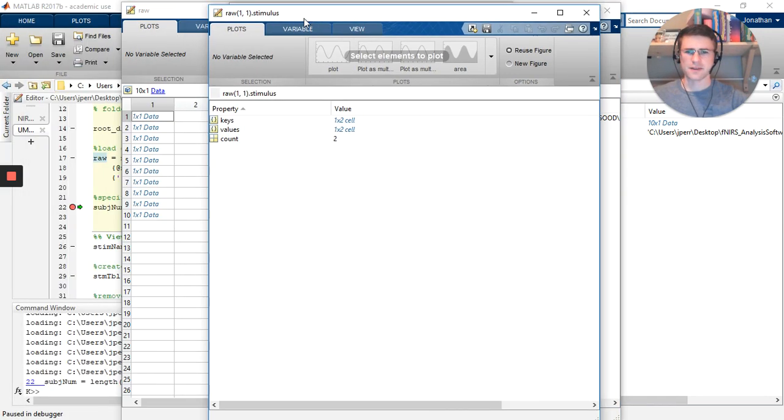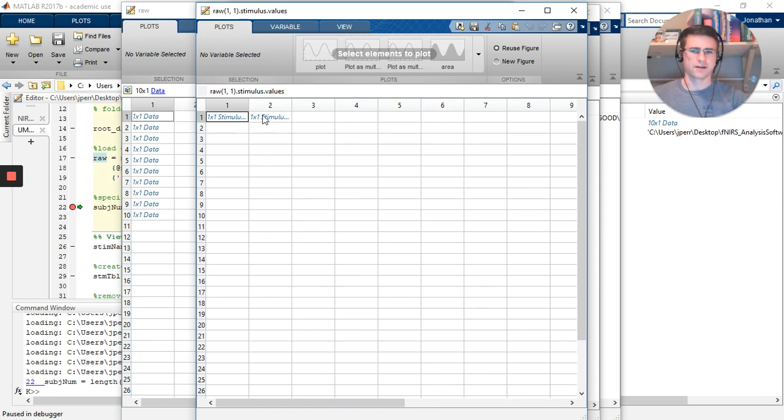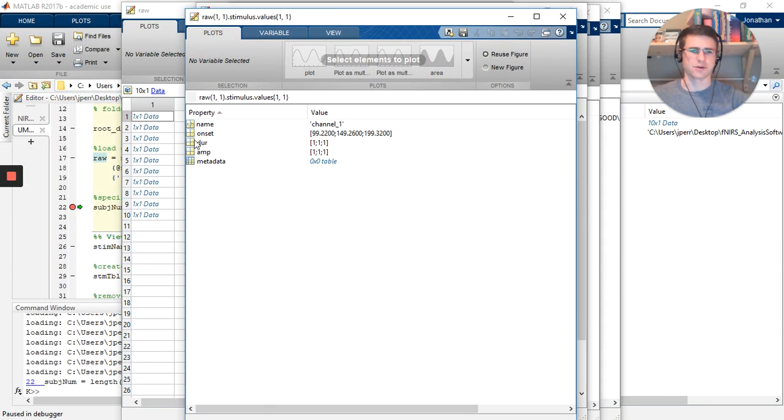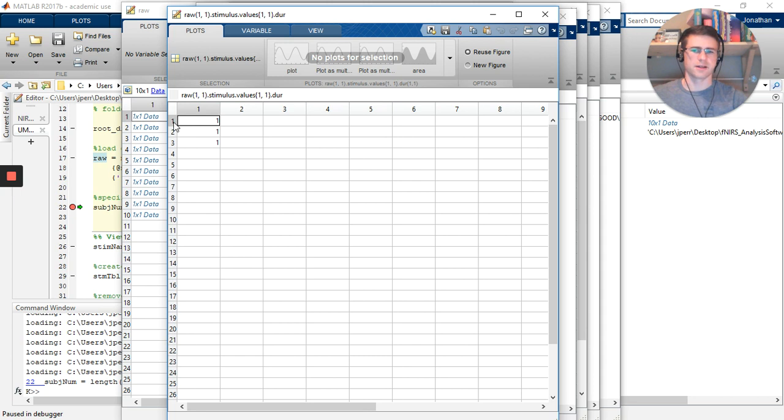If I open that up, this subvariable has keys, values, and a count. I have two event types. If I open up values, the values are in the format of one row per the number of conditions for columns. The duration is saved under the DUR variable. The format of this is one column by the number of occurrences of that stimulus type.